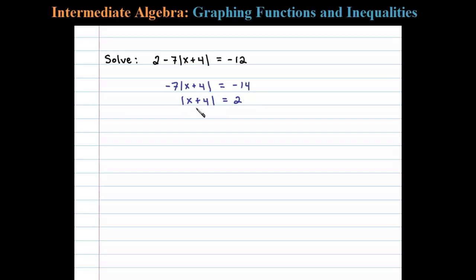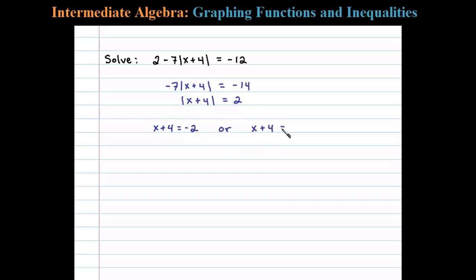Once we have the absolute value isolated, we can then set the argument — x plus 4 — equal to plus or minus 2. In other words, x plus 4 equals negative 2, or x plus 4 equals positive 2.